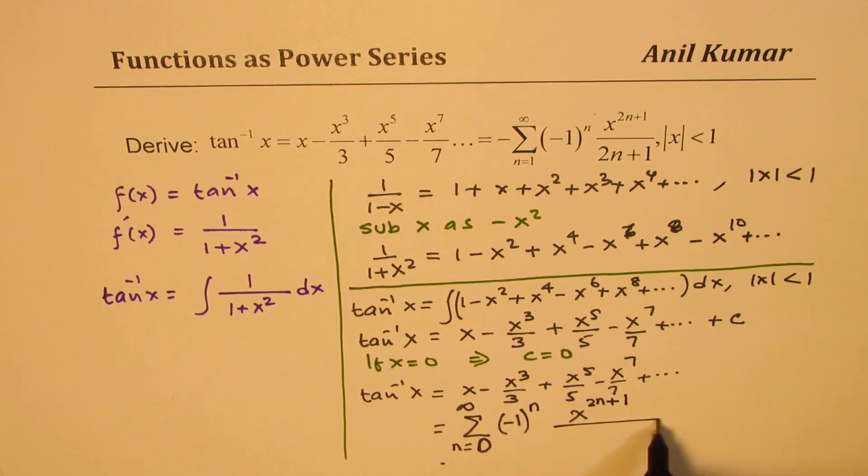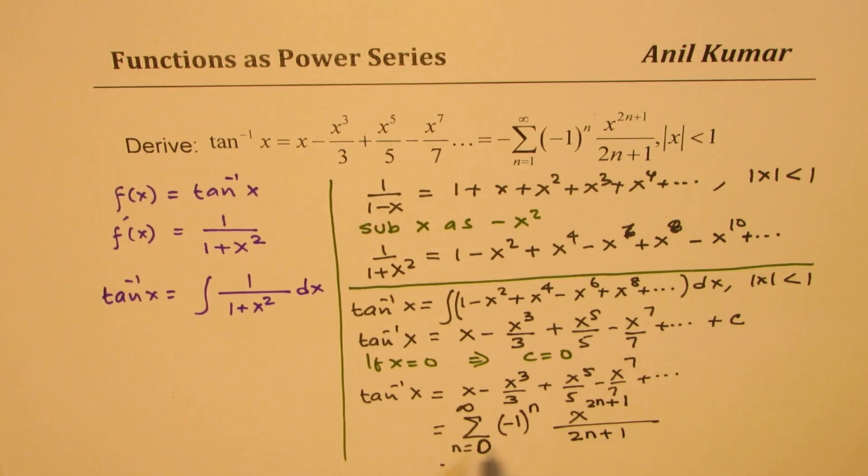If n is zero, then we'll get one in the denominator for the first one, and if n is one, then I get two plus one as three and two plus one as three, so that works out.